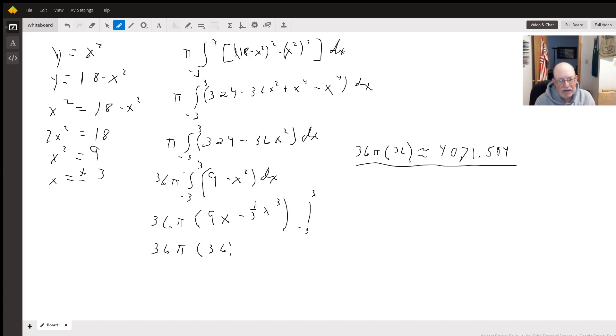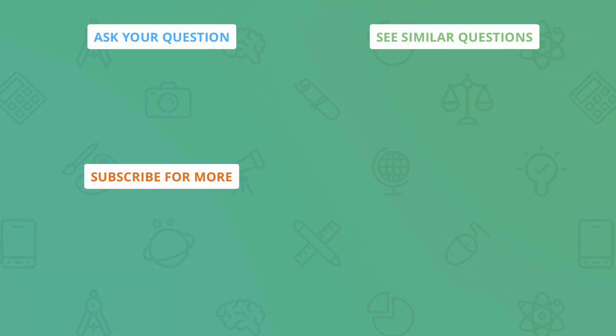That integral will work out to 9x minus 1 third times x cubed. And when you evaluate that from negative 3 to 3, it comes out to be 36. So now we got 36 pi times 36, which equals about 4071.504.